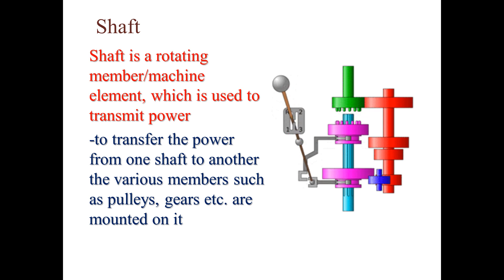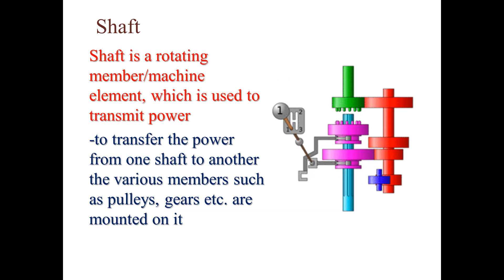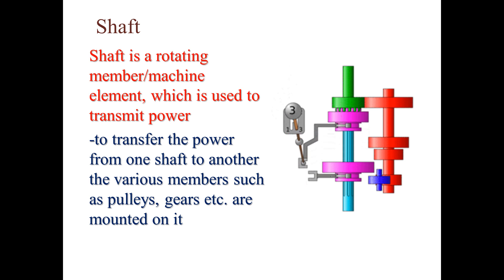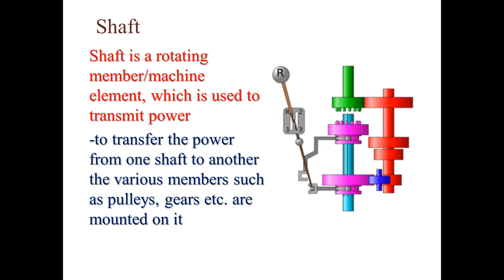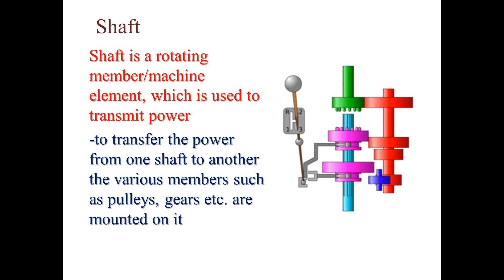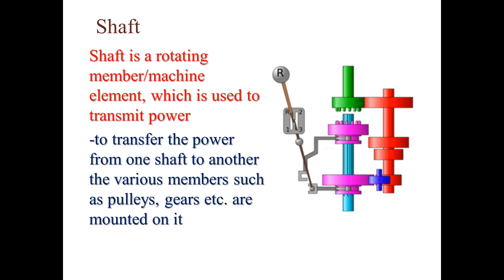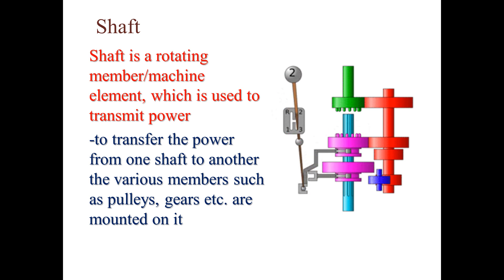The first component we discuss in unit one is the shaft. A shaft is a circular cross-section rotating member. In the animation, the red-colored rotating round cross-section part is the shaft. Anything with a circular cross-section that is used to transmit power is called a shaft. Its function is to transmit power from one side to the other.